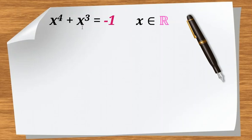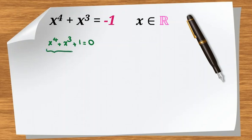x to the 4 plus x cubed equals negative 1, and x is a real number. We want to find all possible values of x. Let's take negative 1 to the left-hand side, so it will be x to the 4 plus x cubed plus 1 equals 0. For large x this expression is positive, so let's consider different cases.